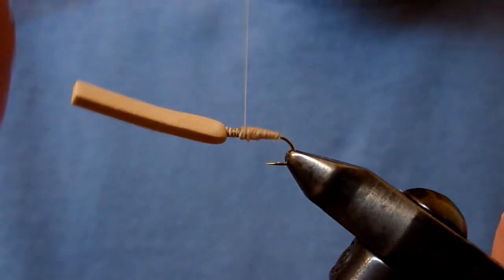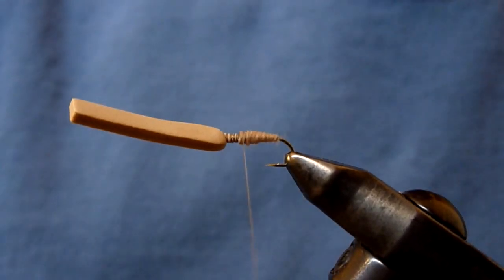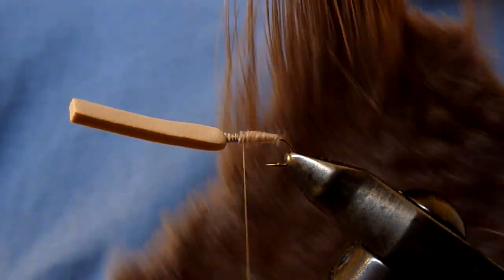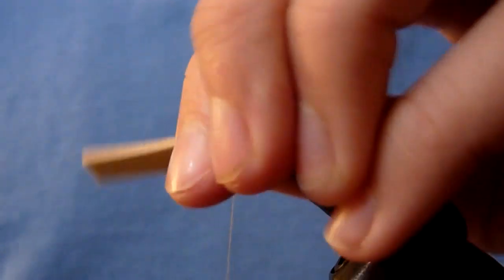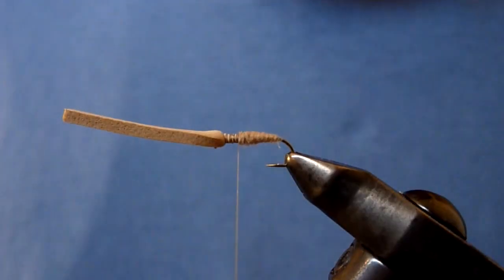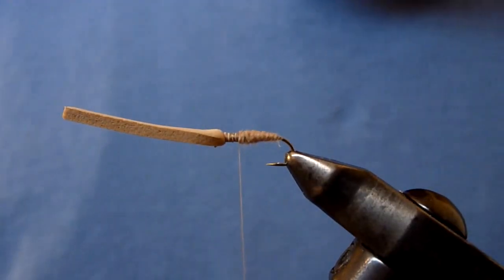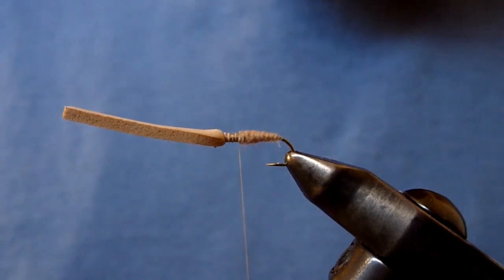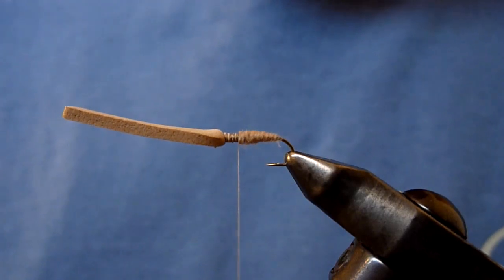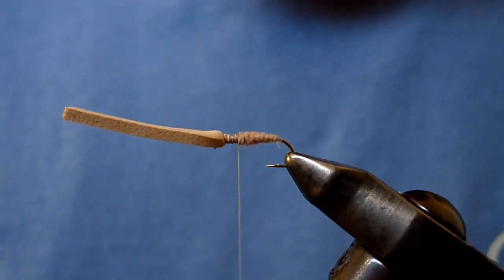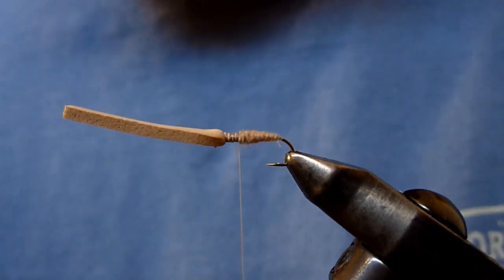Now we're going to tie in the wing. In this case I'm going to use natural elk hair. You can use whatever you have on hand. Mule deer hair, white tail hair. Whatever you got. I'm just going to clip some of that. Get rid of all the wayward pieces at the bottom of those butt ends. Now I'm going to put it in the hair stacker and stack it.